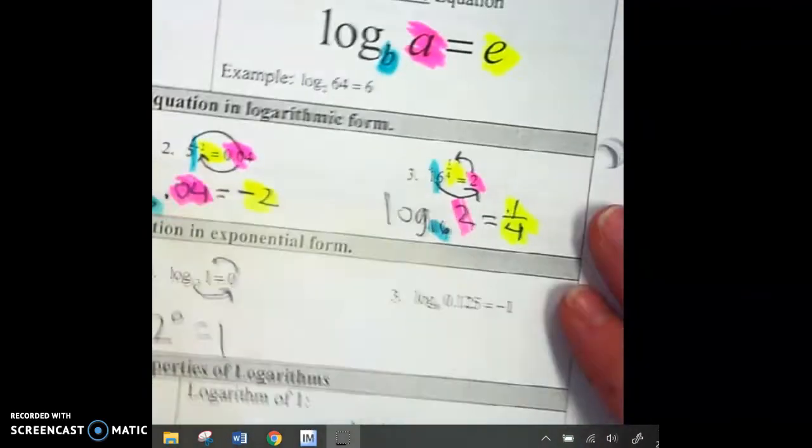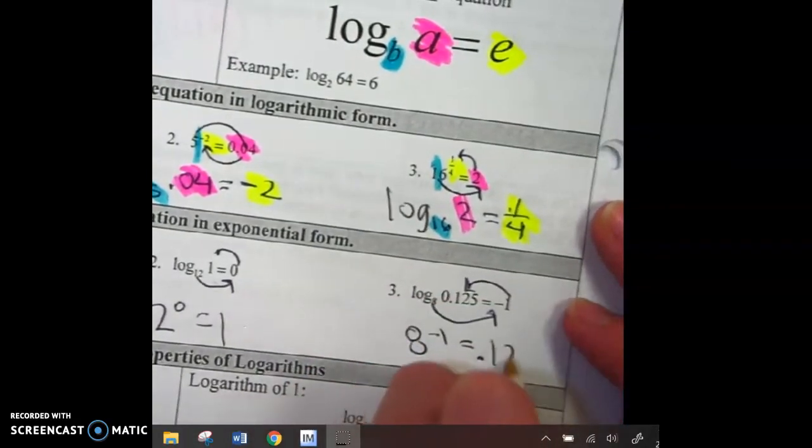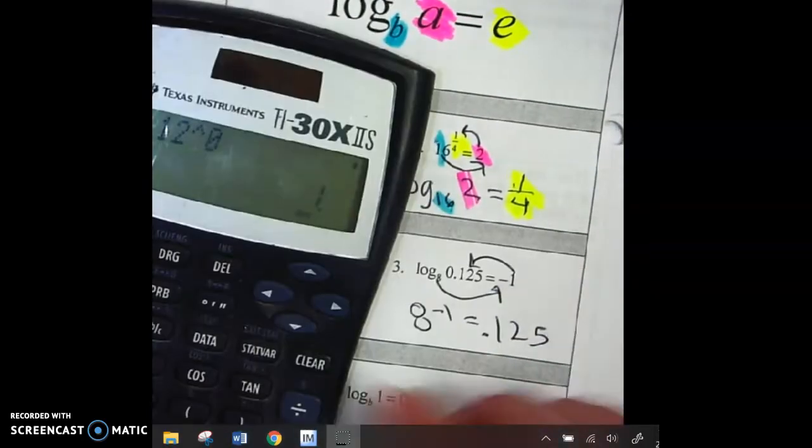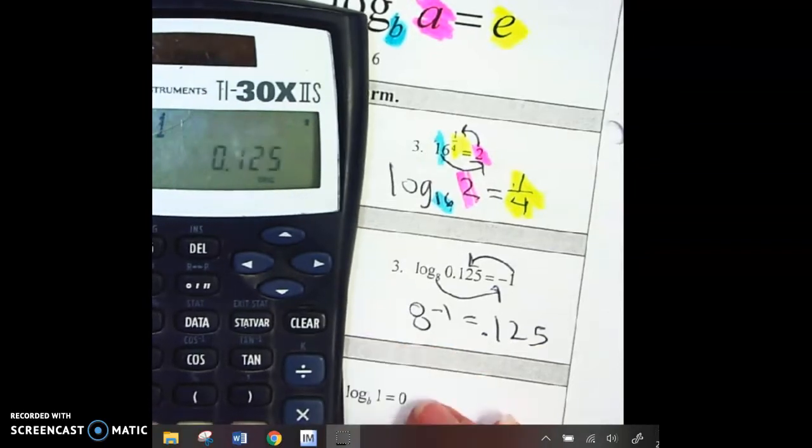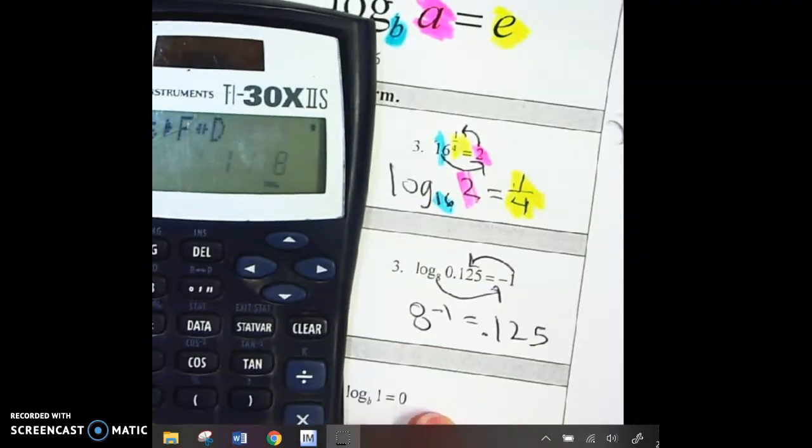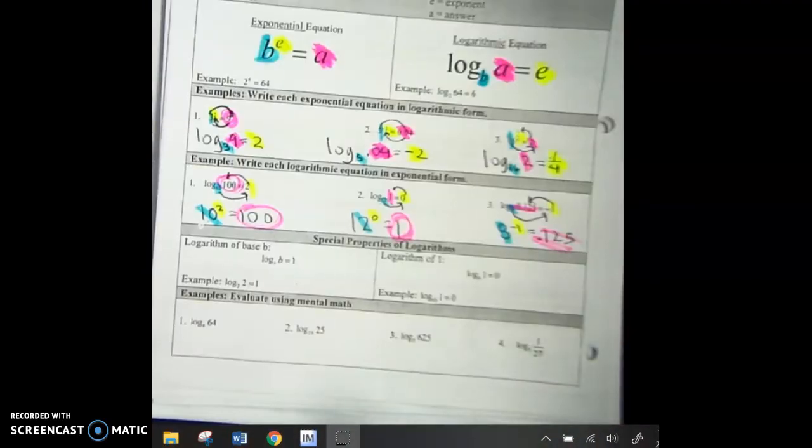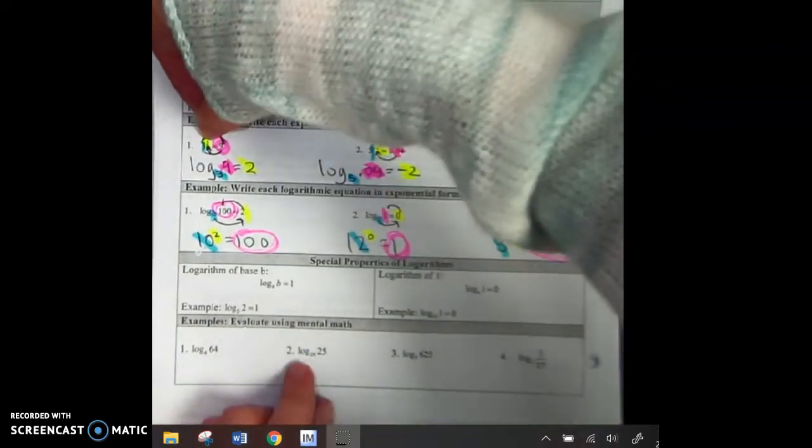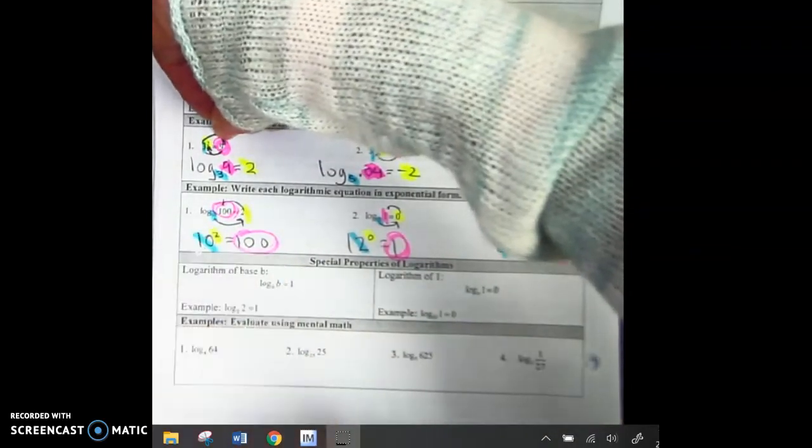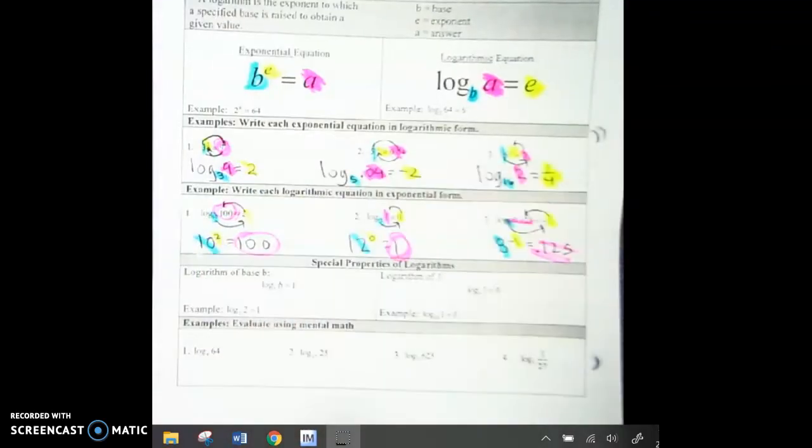And the last one. 8 to the negative 1 equals 0.125. Now, some of you go, well, that's not right. That doesn't feel right. It's a decimal. But I want to remind you, if I change that to a fraction, it's 1 eighth because you're moving it downstairs. So, when I moved the calculator over, I moved it onto the computer, which paused everything, so I talked for a while with nothing happening. Awesome. But here's what I want you to see. Blue, yellow, pink. Blue, yellow, pink. Exponential form. Blue, pink, yellow. Blue, pink, yellow. Logarithmic form.